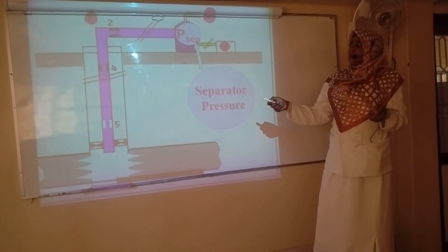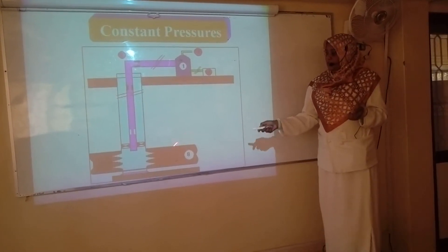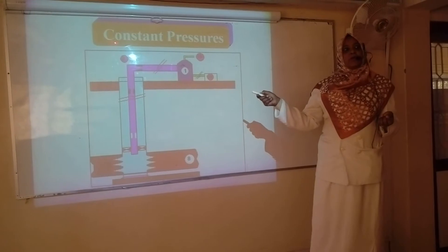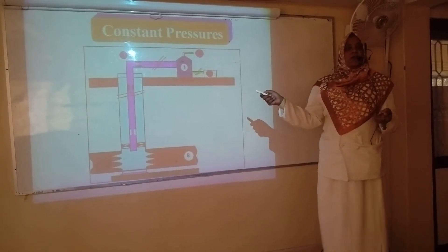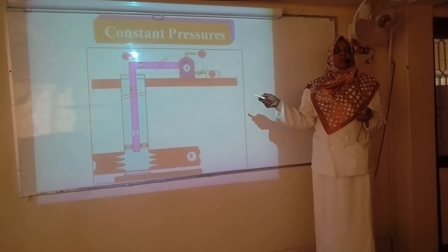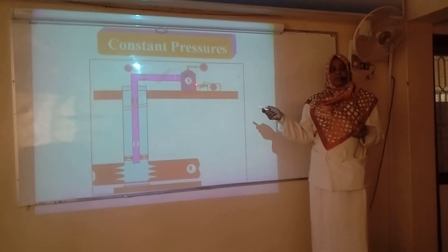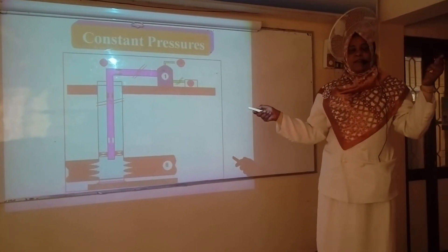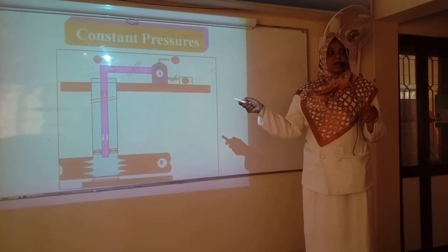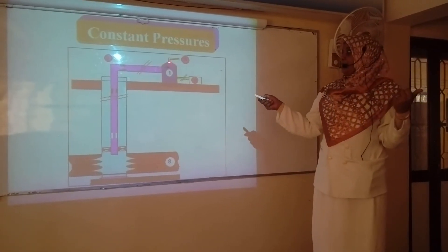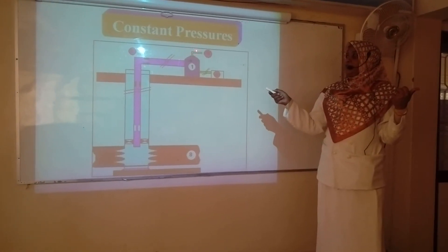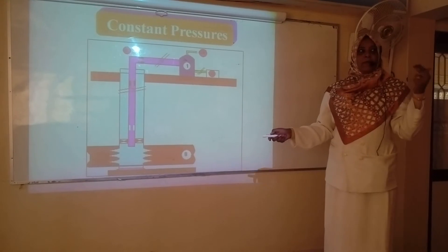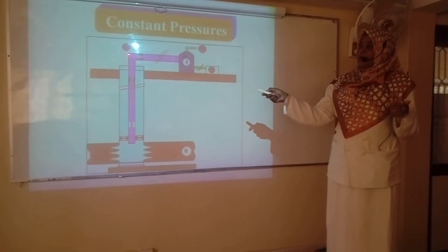There are two constant pressures in any producing system. The first one is the reservoir pressure, or the inlet pressure. The second one is the wellhead pressure or the separator pressure. When we consider the constant pressure as the wellhead pressure, and when we consider the separator as the constant pressure, we have two categories of wells — one can produce under constant wellhead pressure, and if a well is producing under constant separator pressure, the second constant pressure is the separator pressure. So in any producing system there are two constant pressures: the inlet pressure and the outlet pressure, which is either the wellhead or the separator.